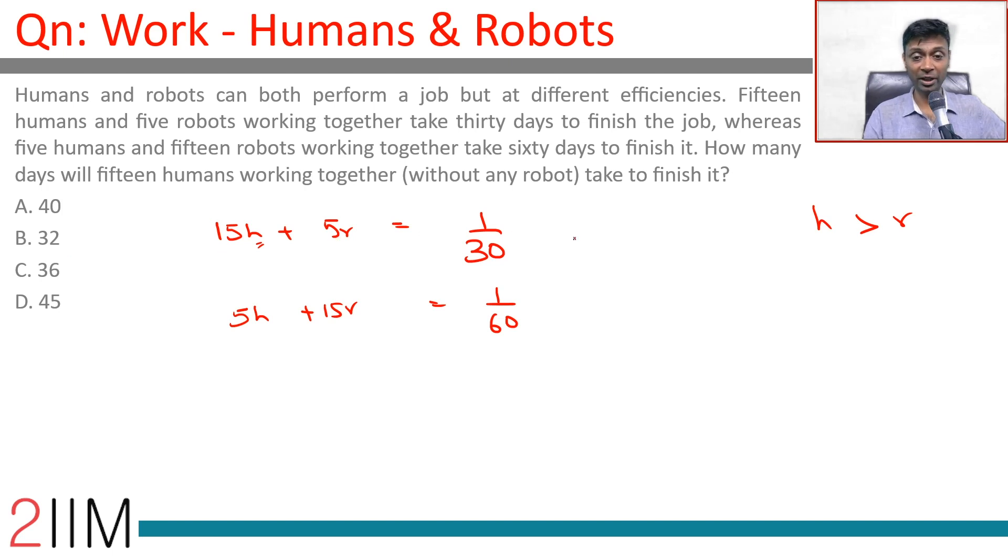I'm going to divide this equation by 5. 3h + r = 1/150, h + 3r = 1/300. We want to eliminate r and retain h.